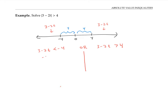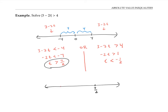For the first inequality, subtracting three from both sides and then dividing by negative two — remembering to flip the inequality due to dividing by a negative number — I get t is greater than seven halves. The second inequality gives t is less than negative one half. Because these two statements are joined with an or, I'm looking for the t values that are in one or the other — both regions put together. In interval notation, this reads negative infinity to negative one half, soft bracket, union, soft bracket, seven halves to infinity.